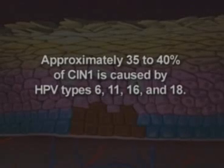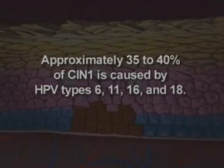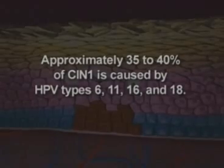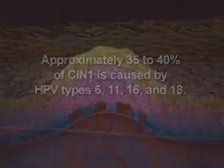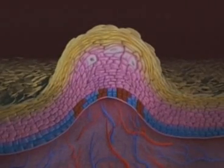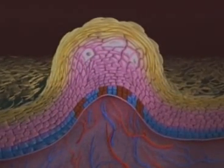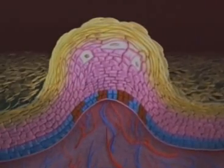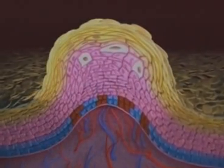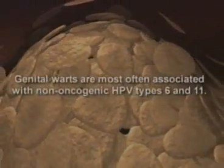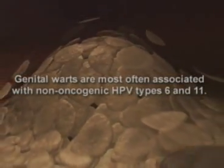Approximately 35 to 40 percent of CIN1 is caused by HPV types 6, 11, 16, and 18. Condylomas, or warts, are benign lesions that can occur when expression of HPV proteins increases the frequency of basal cell replication and disrupts normal maturation of the squamous epithelium. All layers above the basal cells proliferate, leading to hyperplasia and an upwelling of the basement membrane. The visible abnormal growths, composed of a thickened epithelium, are recognized as genital warts, which are most often associated with HPV types 6 and 11.